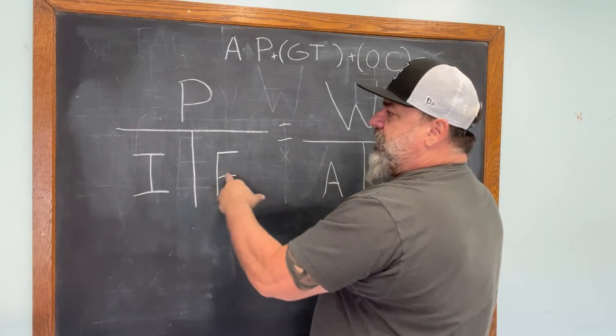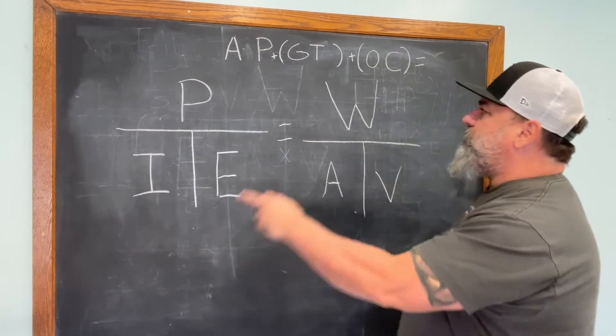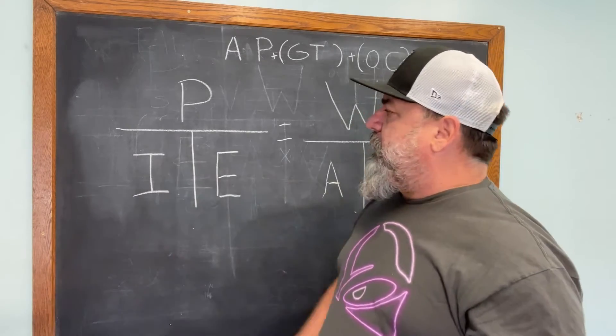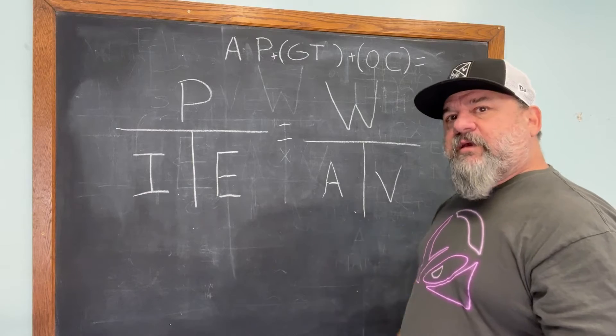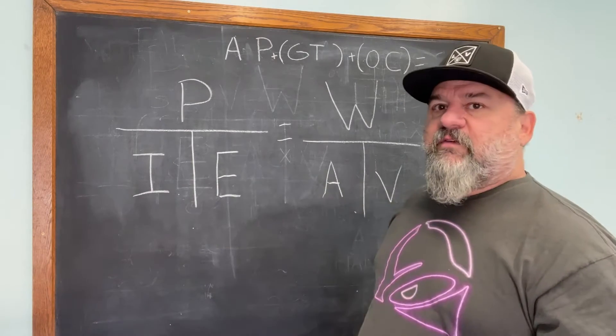P over I times E. What does that mean? P is power. What is power? Wattage is what's consumed, that's the power. I is a symbol for current, we'll call that amps, amperage. E is a symbol for voltage.